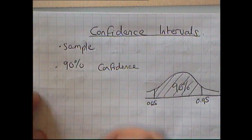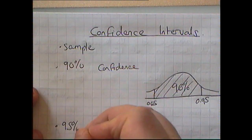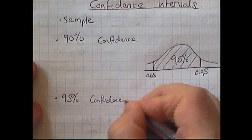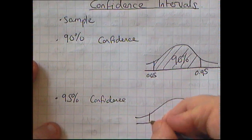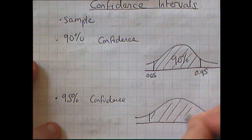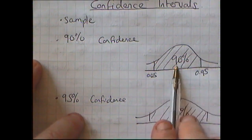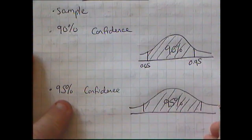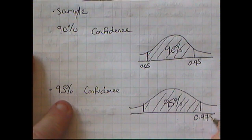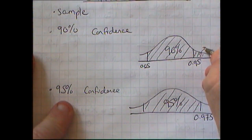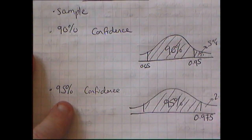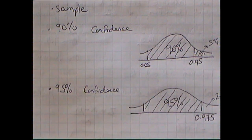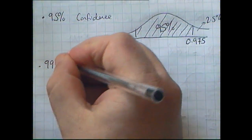On the 95% confidence interval, instead of only being 90% confident between those two values, I now want to be 95% confident — something a little bit more critical. This time I'm looking at 0.975, because the tail up here would only be 5%, with another 5% at the bottom — two and a half percent on each side. Similarly for the 99% confidence interval.